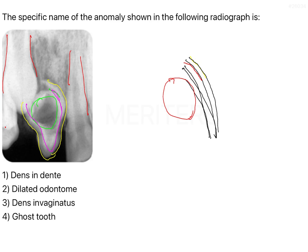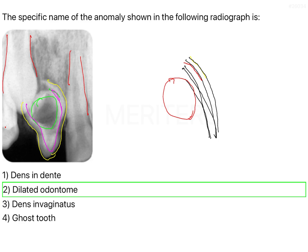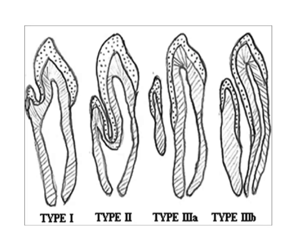So basically it is a tooth present within a tooth, or it is giving the appearance of a tooth within a tooth. This tooth-within-a-tooth appearance is also known as a dilated odontome, which is the answer to the question.